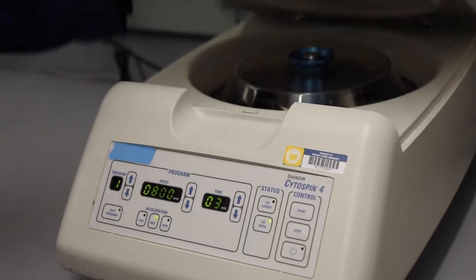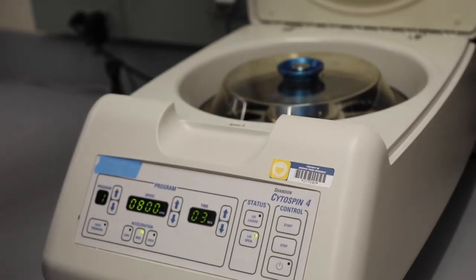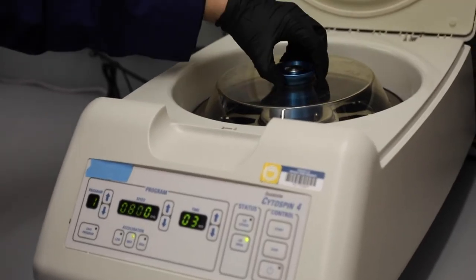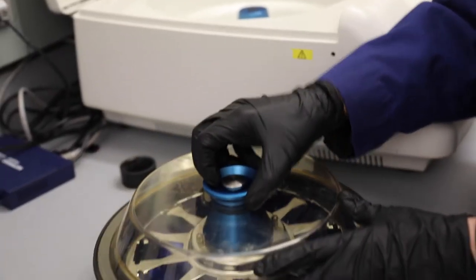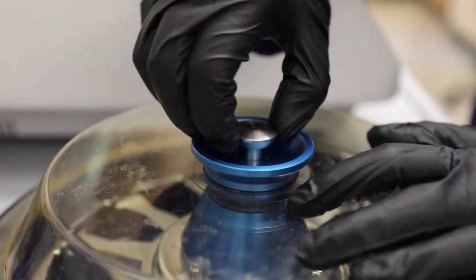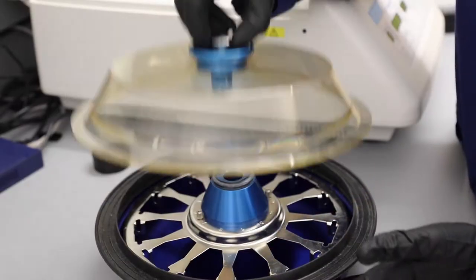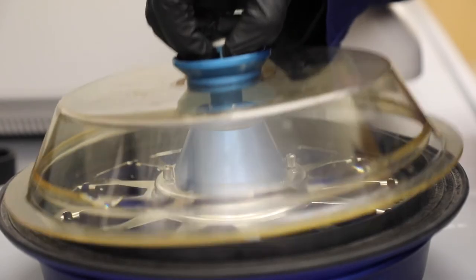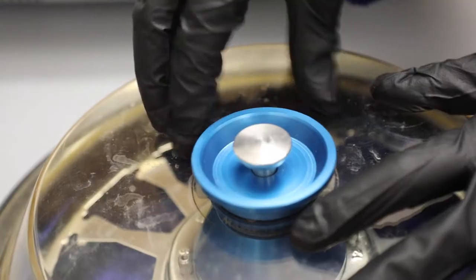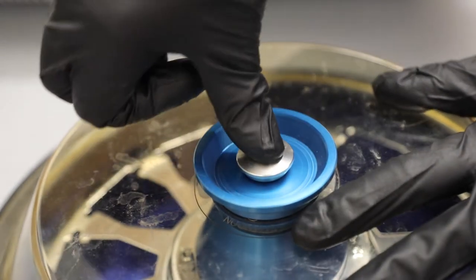The rotor is vacuum sealed and must be removed from the Cytospin before opening in order to avoid damaging its spindle. To open the rotor, pull up on the rod in the center to release the seal, then remove the top. To reset the seal, make sure the plastic top is firmly in the base and push down the center rod.